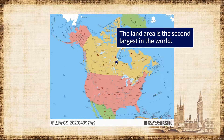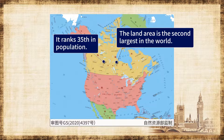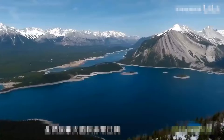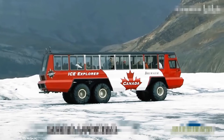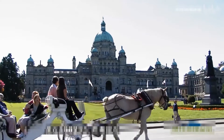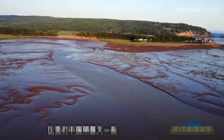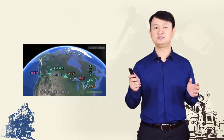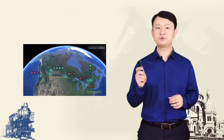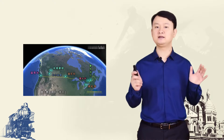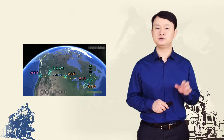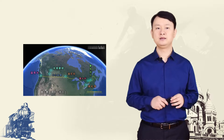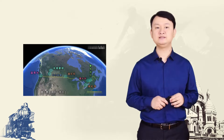Canada is the second largest country in the world in terms of land mass, yet it ranks only 35th in terms of population, with only about 38 million. Canada's population density is roughly 4 people per square kilometer, but this statistic is misleading because most parts of Canada are sparsely inhabited. Owing to the country's geographic and climate situation, the majority of the Canadian population is mainly concentrated along the southern border with the United States, an area that constitutes only about one-tenth of Canada's land mass.